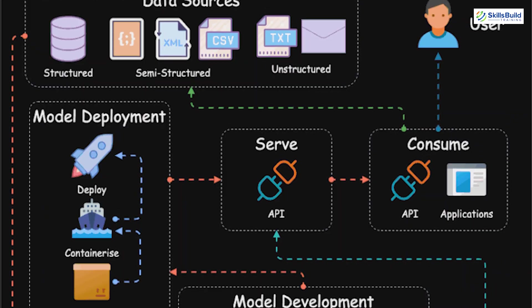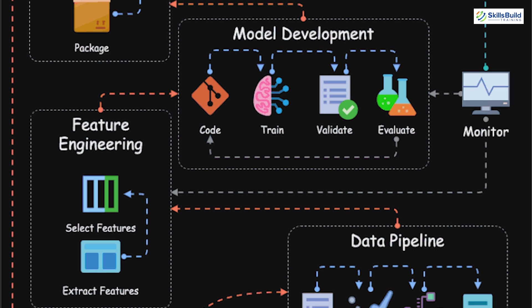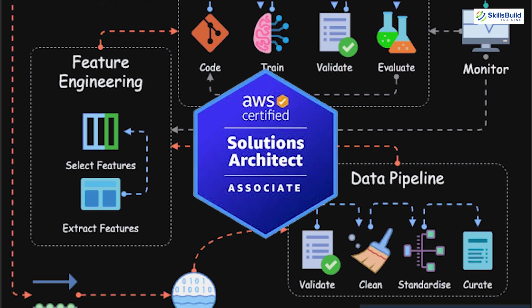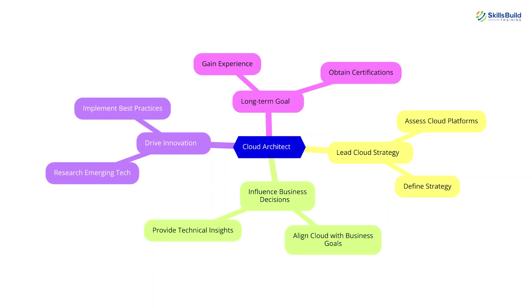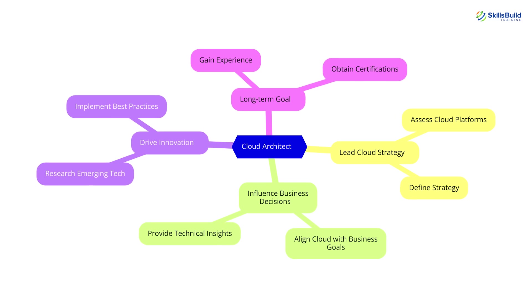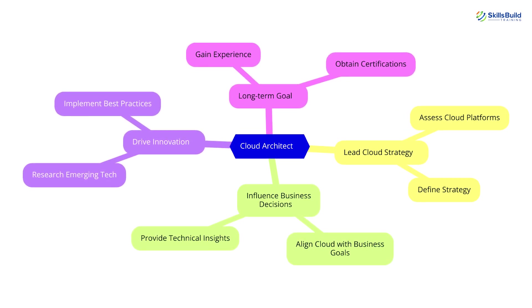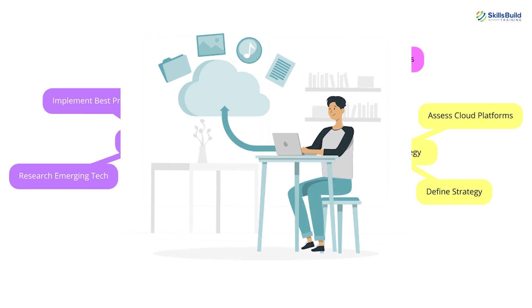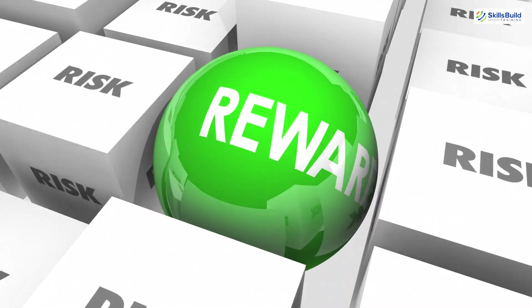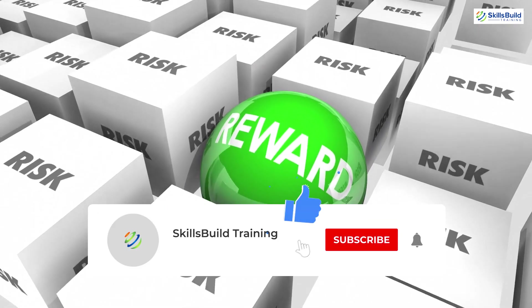So which one should you choose? If you're looking to dive deep into AWS and build technical expertise, start as an AWS Solutions Architect. But if your long-term goal is to lead cloud strategy, influence business decisions, and drive innovation across cloud platforms, aim to become a Cloud Architect. Both paths are rewarding, and each offers unique challenges and opportunities.